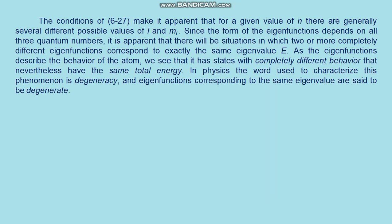Since the form of the eigenfunctions depends on all three quantum numbers, there will be situations in which two or more completely different eigenfunctions correspond to exactly the same eigenvalue E_n. In physics, the word used to characterize this phenomenon is degeneracy; eigenfunctions corresponding to the same eigenvalue are said to be degenerate. Degeneracy also occurs in classical mechanics: in the Bohr-Sommerfeld atom, the total energy is independent of the semi-minor axis of the ellipse, so the atom has states with very different behavior but the same total energy — exactly as in planetary motion.